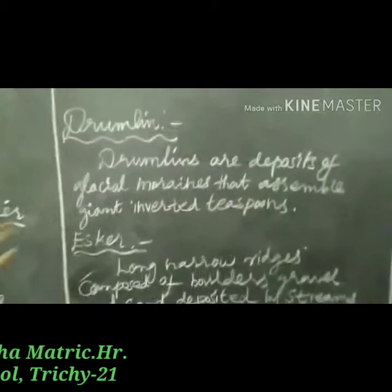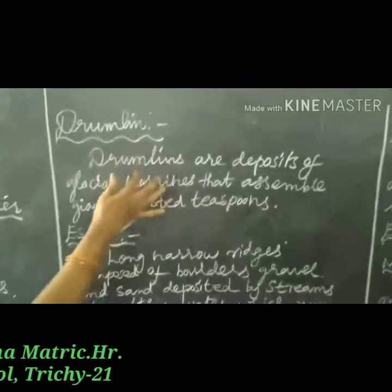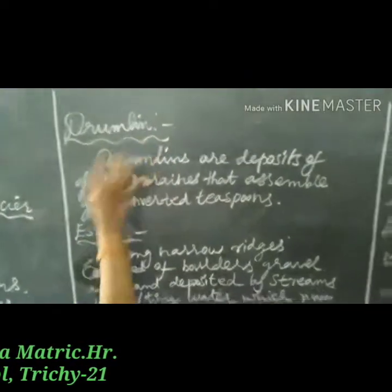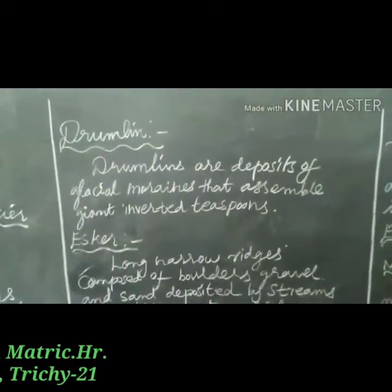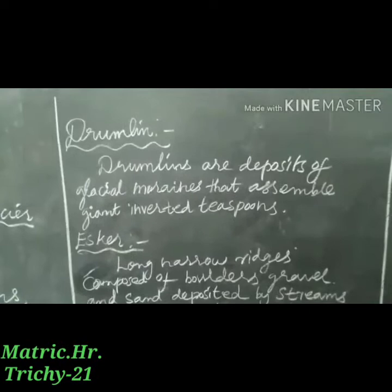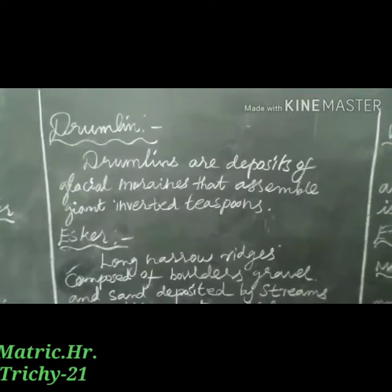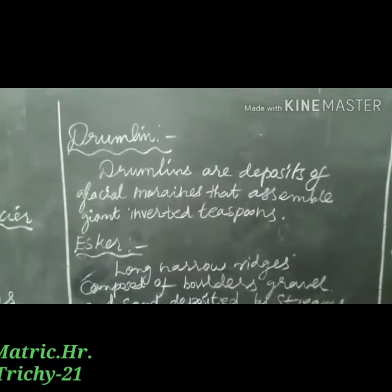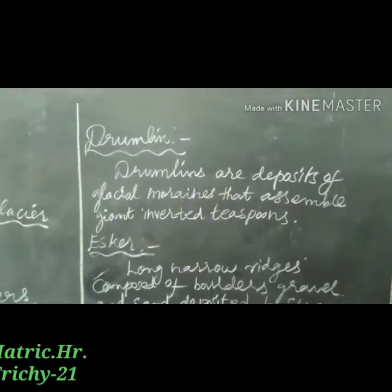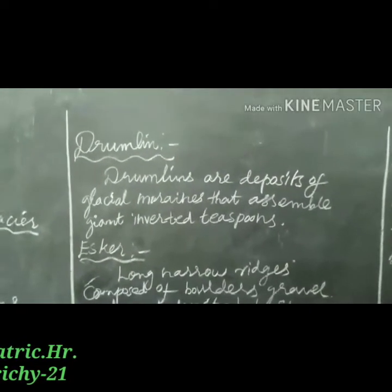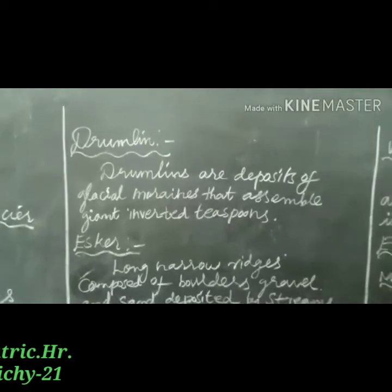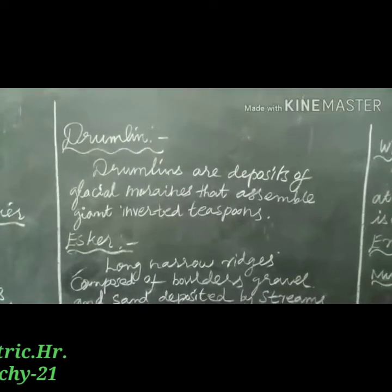Next is Drumlins. Drumlins are deposits of glacial moraines that resemble an inverted spoon or the shape of half eggs.